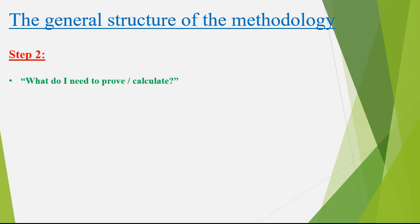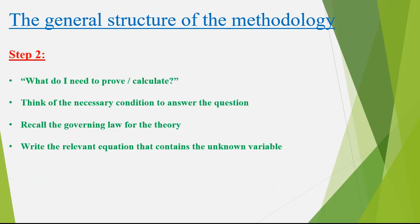Step number two: For each section of the problem, we ask the question, what do I need to prove or calculate? This way, we look for the condition necessary to answer the question based on the governing laws. Then, we write the appropriate equation that includes our unknown variable.